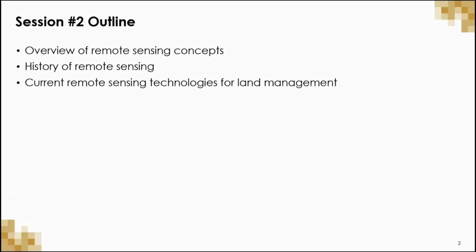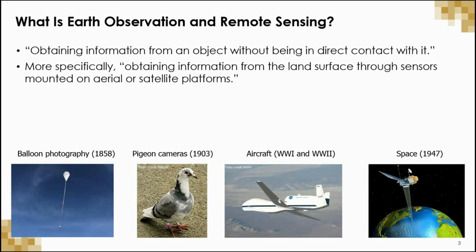In this session we will provide an overview of remote sensing concepts, the history and evolution of remote sensing, and the current and emerging remote sensing technologies for land management. First we need to understand what is meant by Earth Observation and Remote Sensing. Earth Observation essentially refers to the process of obtaining information from an object without being in direct contact with it, and more specifically, obtaining information from the land surface through sensors mounted on aerial or satellite platforms.